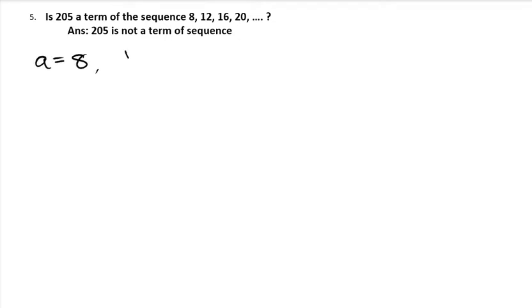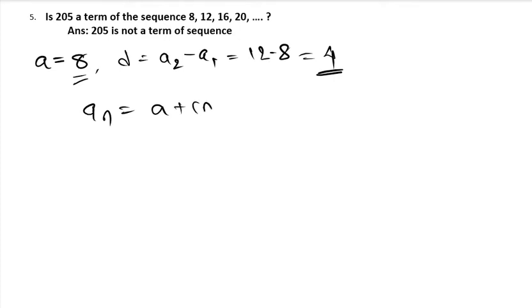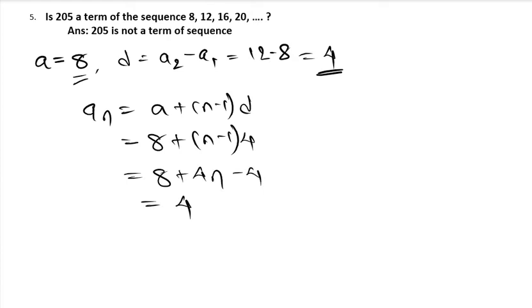Is 205 a term of the AP 8, 12, 16, 20? First term A equals 8, common difference D equals 12 minus 8 equals 4. Find the nth term: A plus (n minus 1) into D equals 8 plus (n minus 1) into 4. Expanding: 8 plus 4n minus 4, which gives 4 plus 4n. This is the nth term.